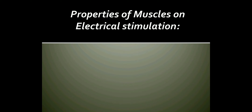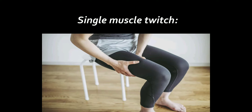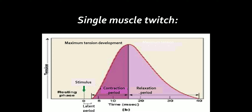Properties of muscles on electrical stimulation. Single muscle twitch: A muscle contraction initiated by a single brief stimulation is called a single muscle twitch. It occurs in three stages: a latent period of no contraction, a contraction period, and a relaxation period.